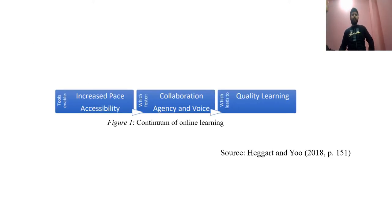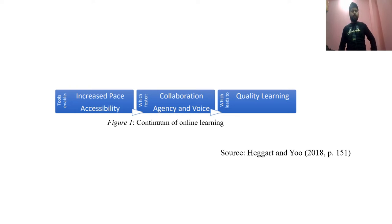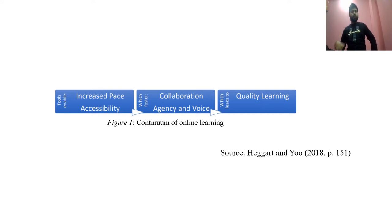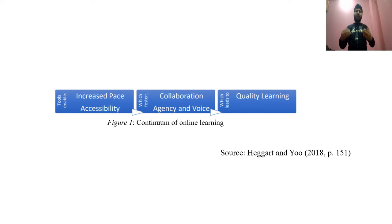Now I want to share an idea developed by Haggard and colleagues back in 2018. This framework shows the continuum of online learning, which is about increasing the pace of accessibility so that, even in this pandemic situation, students can access reading resources, stay busy in learning, and engage in discussion. There should be collaboration between all agencies — parents, teachers, and learners — and we need to listen to their voices. Only then is quality learning possible, and quality learning is one of the key challenges in this pandemic situation.